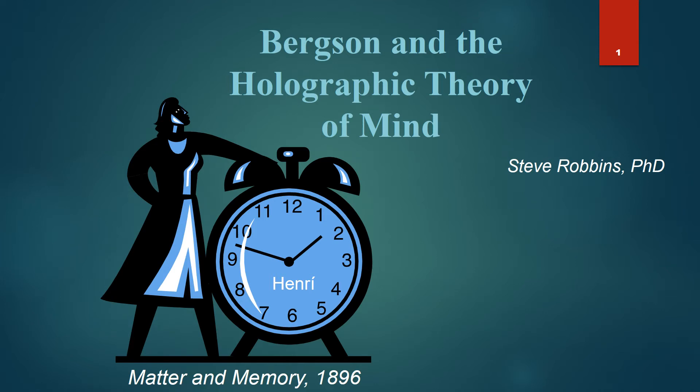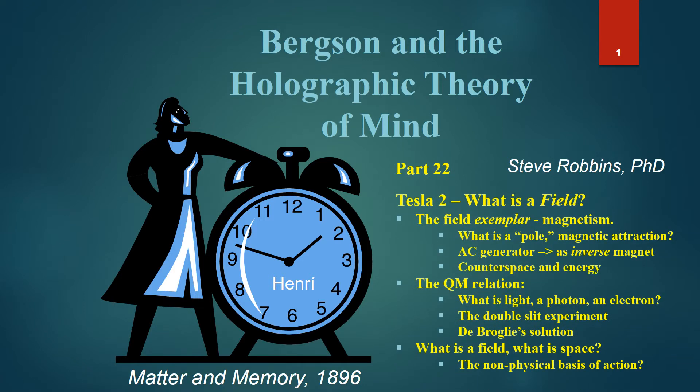Welcome again to Bergson and the Holographic Theory of Mind, ongoing part 22. We'll call this Tesla 2, or 'what is a field.' The field exemplar is magnetism, and we have action at a distance in the field. The questions we'll look at: what is a pole, what is magnetic attraction, an AC generator as an inverse magnet, the notion of counter space and energy. We'll also look at the quantum mechanic relation of this field conception to what is light, a photon, an electron, the double slit experiment, de Broglie's solution, what is a field, what is a space, and ultimately touching on the non-physical basis of action.